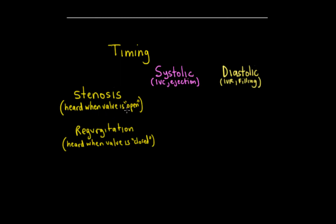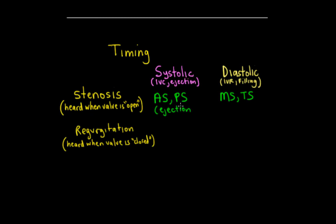A stenosis murmur occurs with forward flow across an open valve. During systole, ejection is the only phase with an open valve, and during diastole, filling is the phase with an open valve. So aortic valve stenosis and pulmonic valve stenosis produce a systolic murmur — specifically an ejection type murmur, since that's when the semilunar valve is open. Mitral stenosis and tricuspid stenosis produce diastolic stenotic murmurs — filling murmurs, since that's when the AV valves are open.